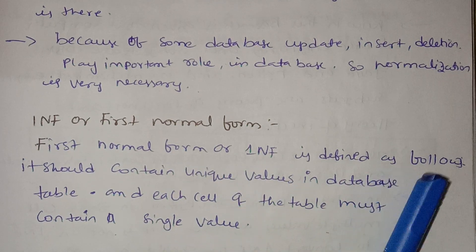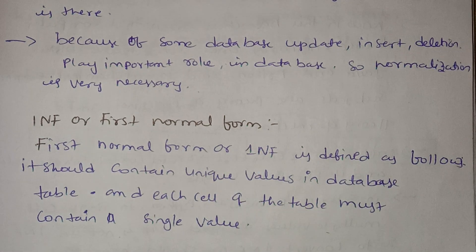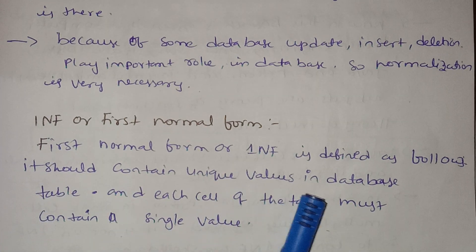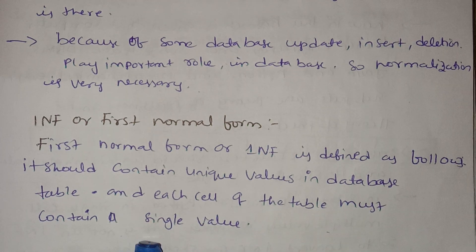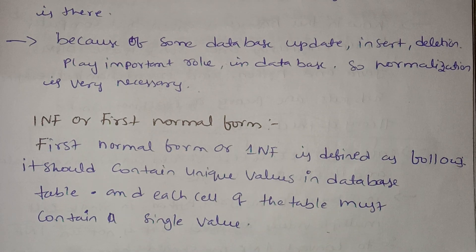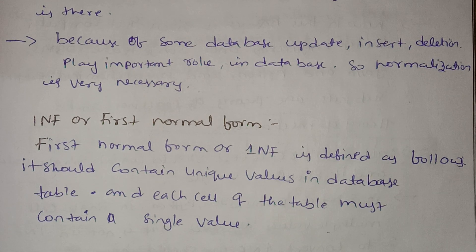1NF is defined as follows: 1NF must contain a single value in each cell. What I am saying is each cell must have unique values — for example, different roll numbers in the student table, and each cell must contain only one value.